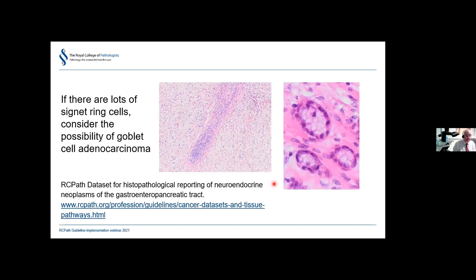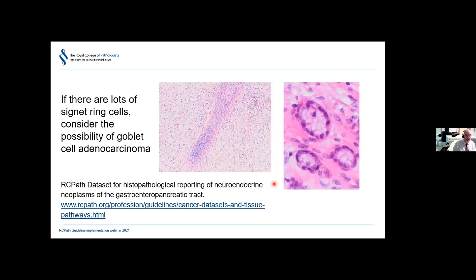Finally, if there are many signet ring cells, consider the possibility of goblet cell adenocarcinoma. If you find areas with the classical features of goblet cell adenocarcinoma, then that is what it is, and you should use the neuroendocrine tumour dataset for reporting — the link is at the bottom of the screen. In the future, goblet cell adenocarcinomas will very likely be included alongside other adenocarcinomas of the appendix in the current dataset. That concludes the presentation.